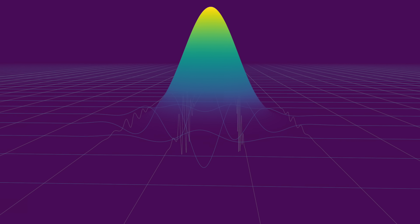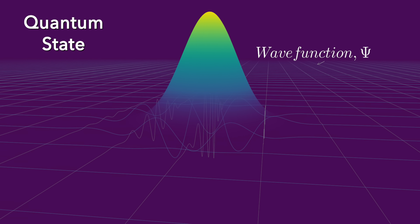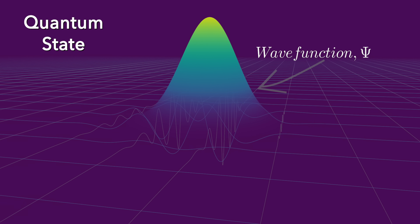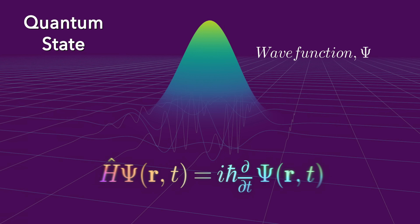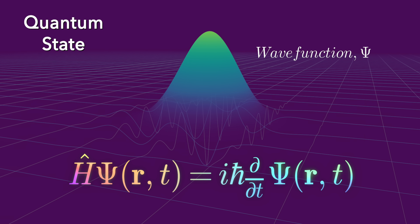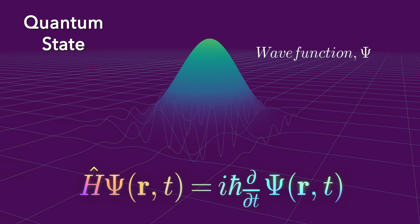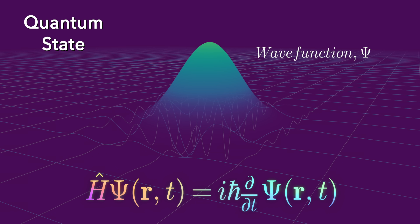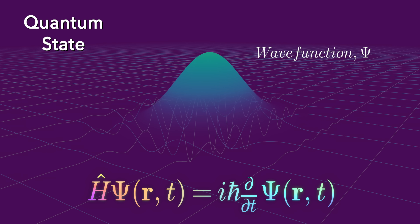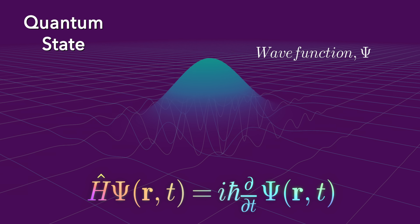In quantum mechanics, if you know the quantum state of a particle — that is its wave function — you can use the Schrödinger equation to calculate what that particle will do in the future. Usually it spreads out over time, as it is doing here. Note: to make this animation, we really solved the Schrödinger equation.